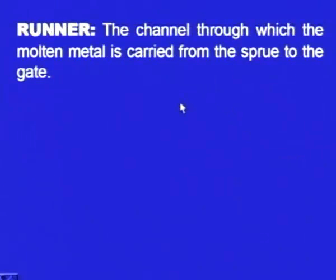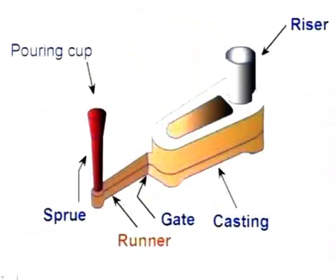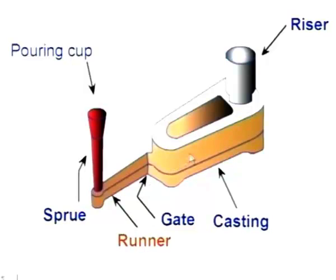Next term is the runner. It is the channel through which the molten metal is carried from the sprue to the gate. Molten metal passes from the pouring cup, through the sprue, to the choke, then reaches the runner, and finally reaches the mould cavity.